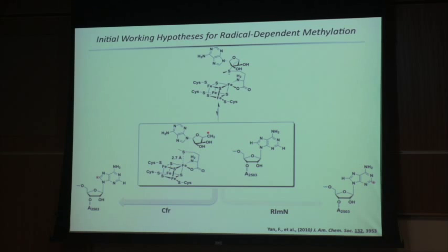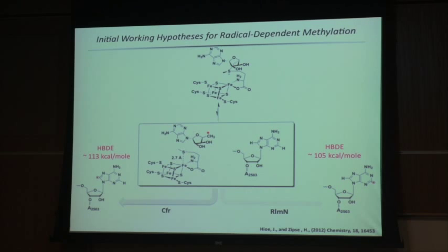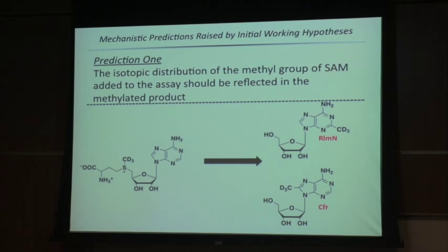There were a number of things we didn't like about this mechanism. The homolytic bond dissociation energy for cleaving the C-H bond at C8 is about 113 kcal/mol — that would be more than methane monooxygenase. At C2 it's about 105 kcal/mol, roughly equivalent to methane monooxygenase. So we never really liked this mechanism. But the good thing, as I learned as a student, is that it's experimentally testable — we can design experiments to interrogate it.